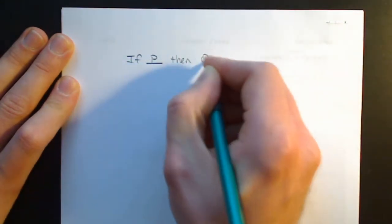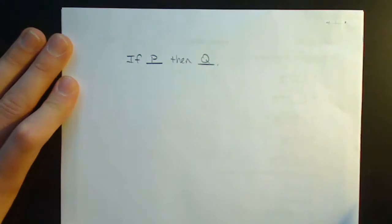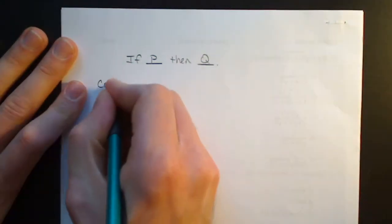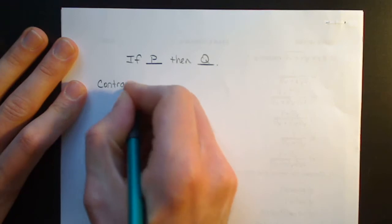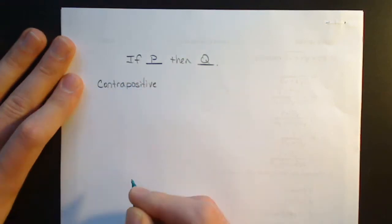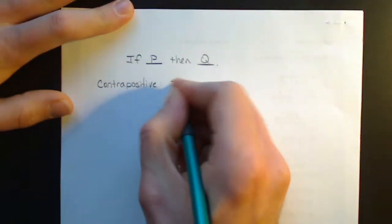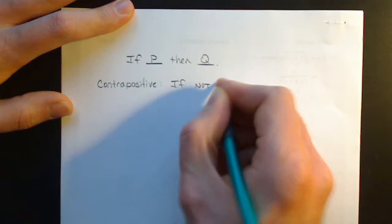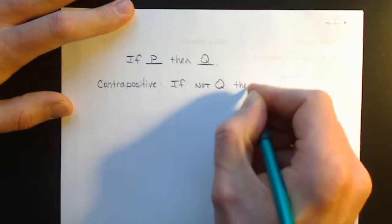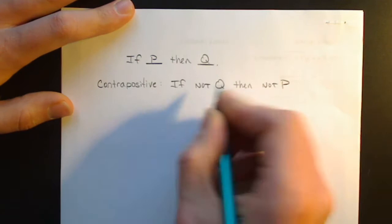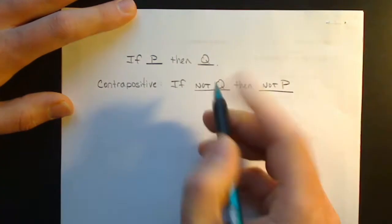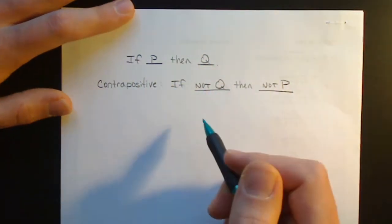Now we will take a look at the contrapositive of a statement. Again, we're working with if P, then Q. The contrapositive is going to be the statement if not Q, then not P. You switch the Q and the P, but you introduce a negation, a not.